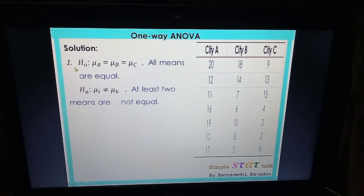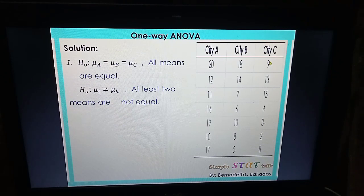Our null hypothesis: all means are equal, meaning the mean of City A, City B, and City C are equal. Alternative hypothesis: at least two means are not equal. It could be City A and City B are not equal, or City A and City C are not equal, or B and C are not equal.